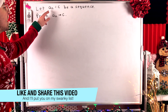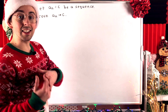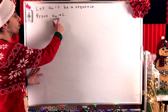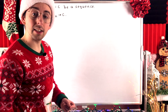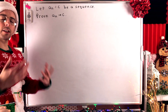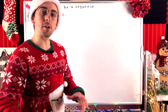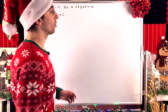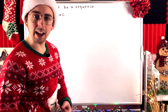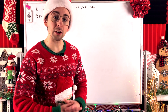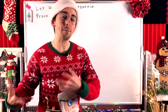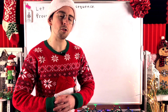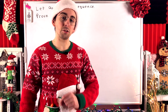We'll be proving that if every term of a sequence is equal to the same real number, say C, then that sequence converges to that constant value C. This is a great way to practice the definition of a convergent sequence to prove a simple, obvious result. If you need a recap of the definition of a convergent sequence and what it means for a sequence to converge to some limit, I'll leave a link in the description to my lesson on the topic.